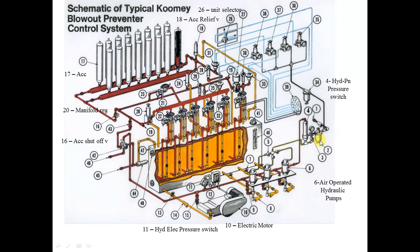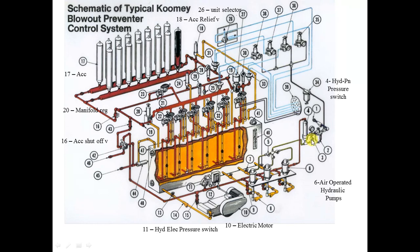Number two is called the air lubricator, which contains some oil that provides lubrication for the air in order not to cause erosion while entering the system. Number three is called the bypass valve. This bypass valve is always a manual valve, and it is closed all the time during operation.